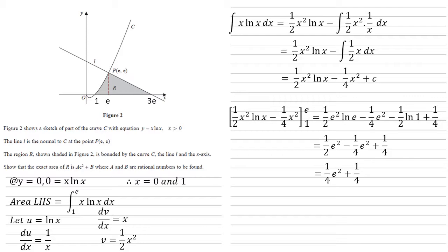So our total area of R is going to be this, added to the e squared for the right-hand side, giving us an answer of 5 quarters e squared plus a quarter.